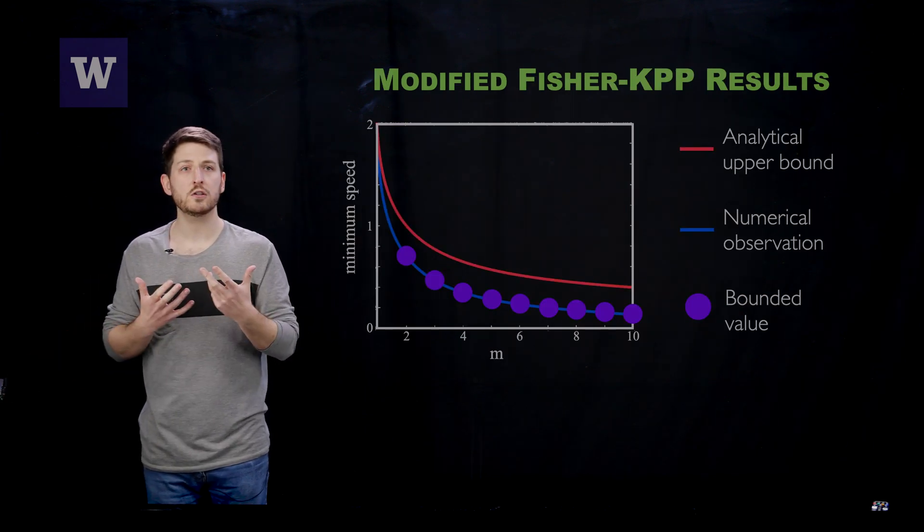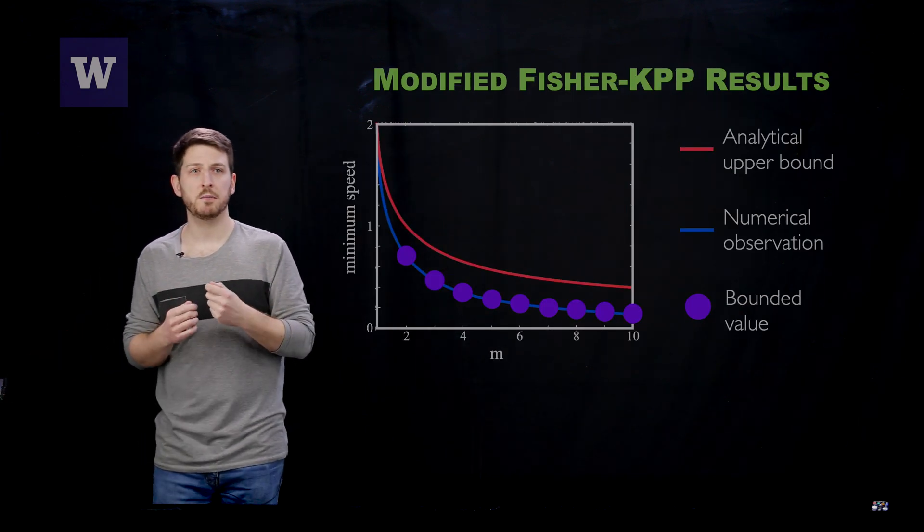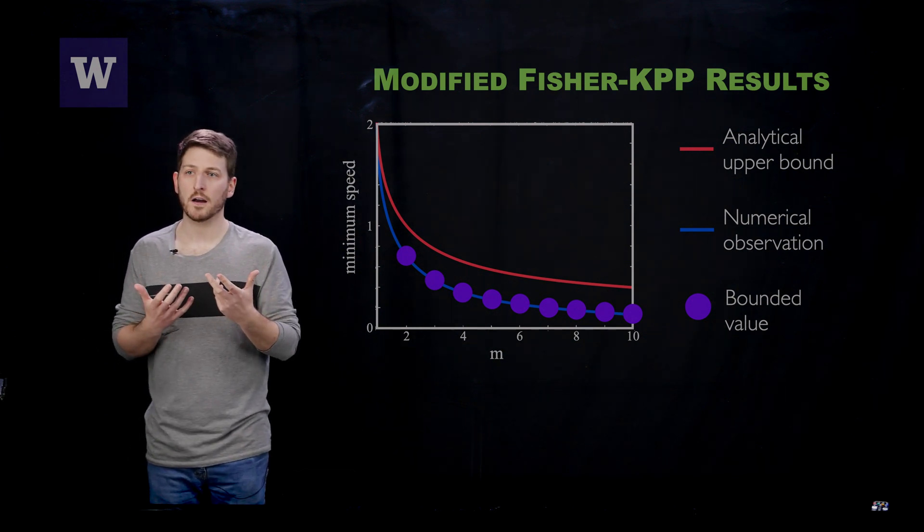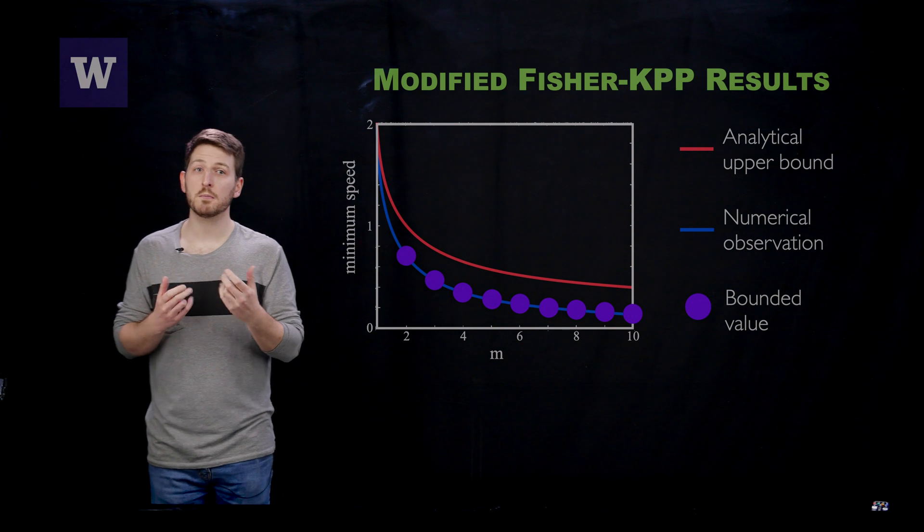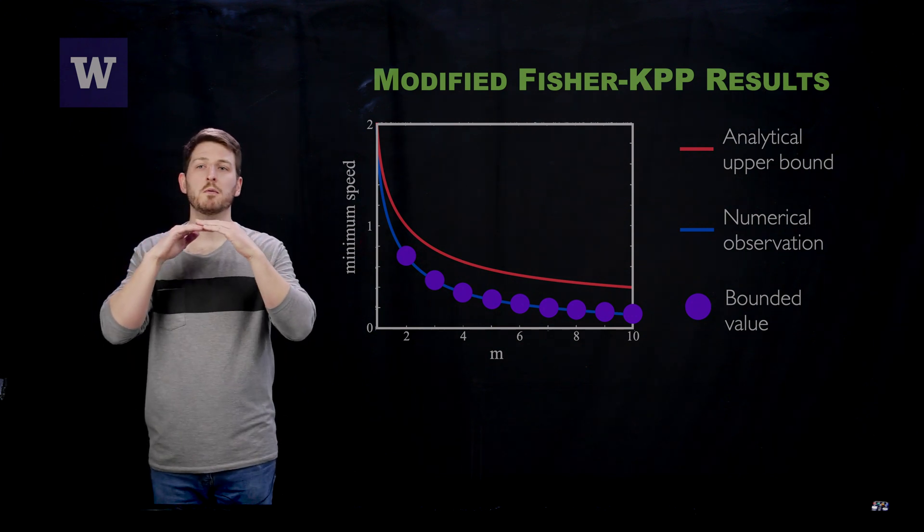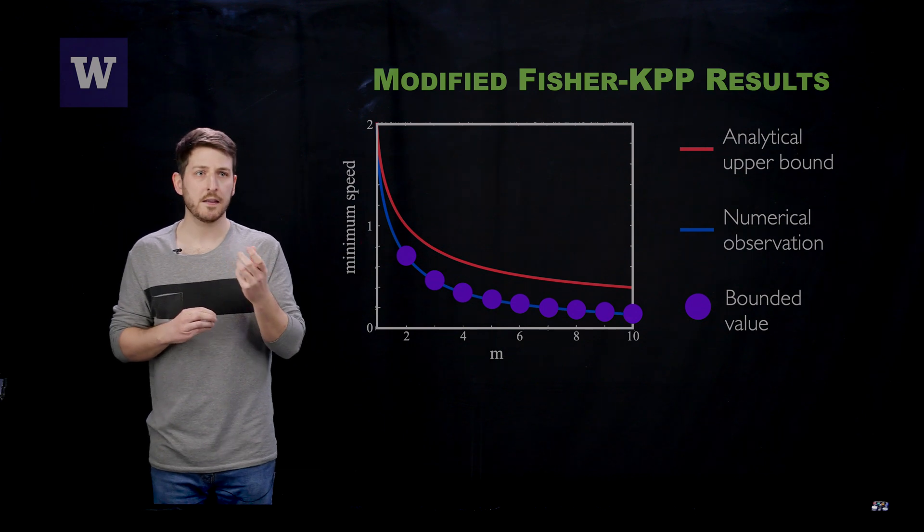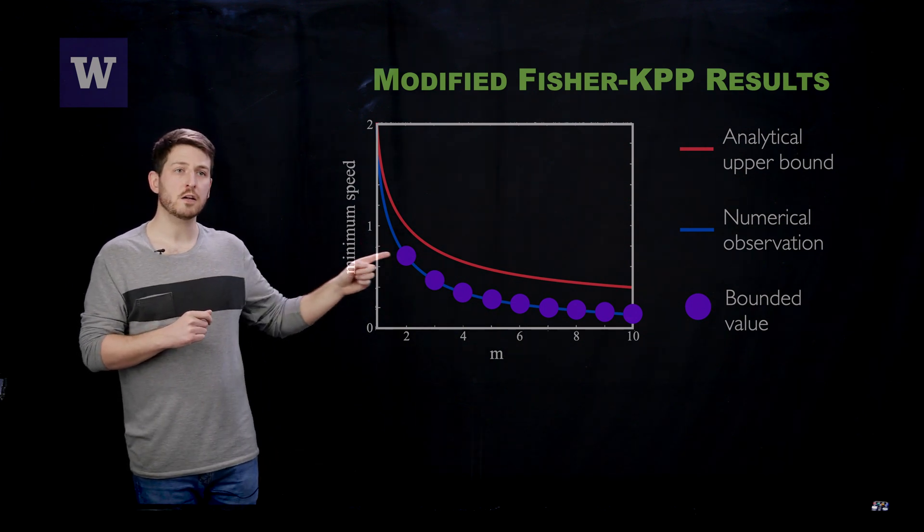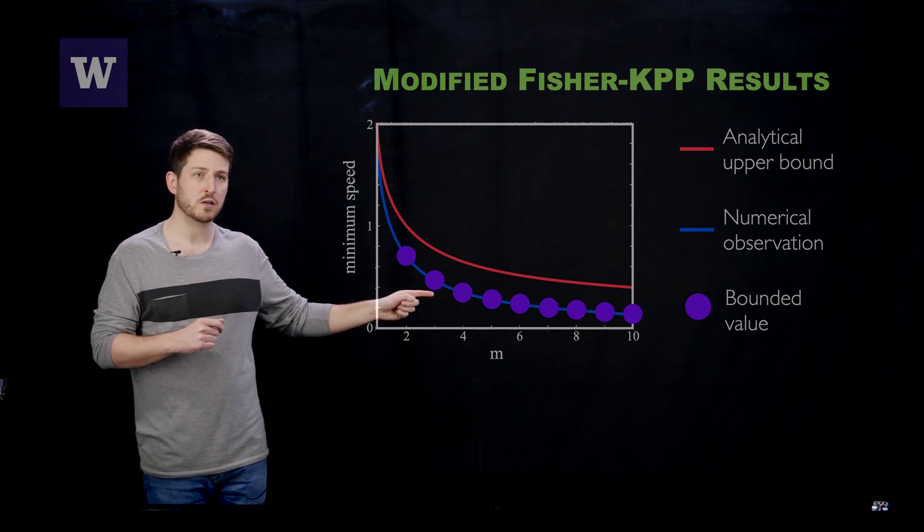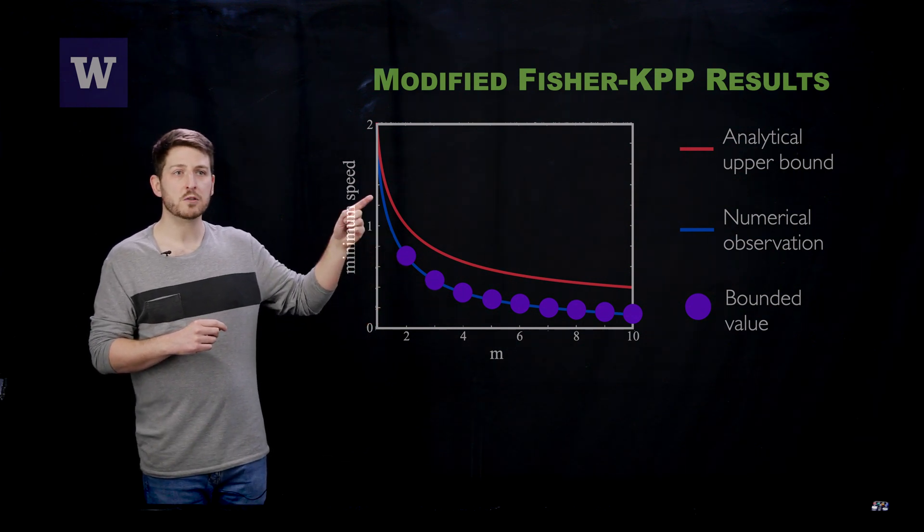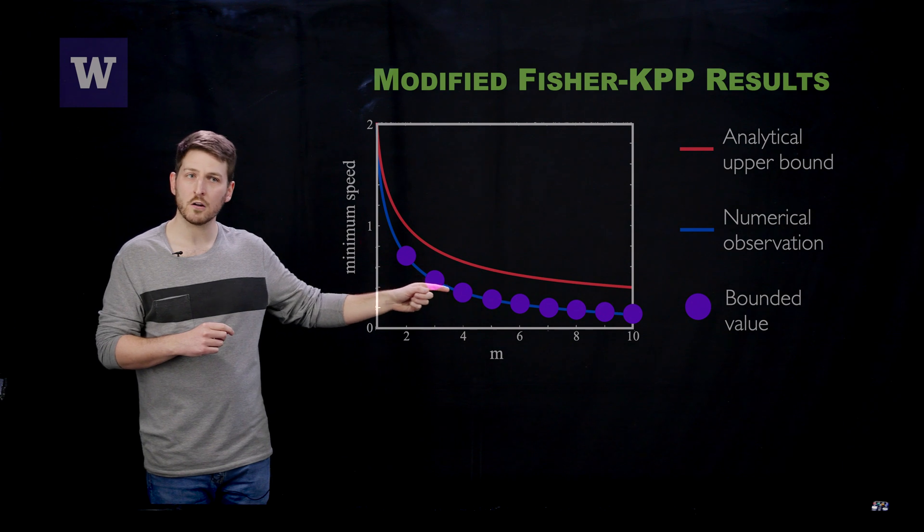If we return to the modified Fisher-KPP equation to illustrate this, the convergence is so sharp, in fact, that we find agreement between the upper and lower bounds for the minimum wave speed up to the fourth decimal place. These values are illustrated by these purple dots which I've overlaid on Billingham's figure. You can see that they lie almost perfectly along his numerical observation.